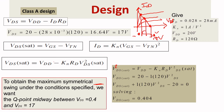Now you want to find VDS saturation. Using the formula VDS saturation equals VDD minus KN times RD times VDS saturation squared, substitute VDD=20, KN=1, RD=120, with VDS saturation squared as unknown. This is a quadratic polynomial equation of degree 2 in one variable. You will get two VDS saturation values — one positive and one negative. Take the positive value, which is 0.404.